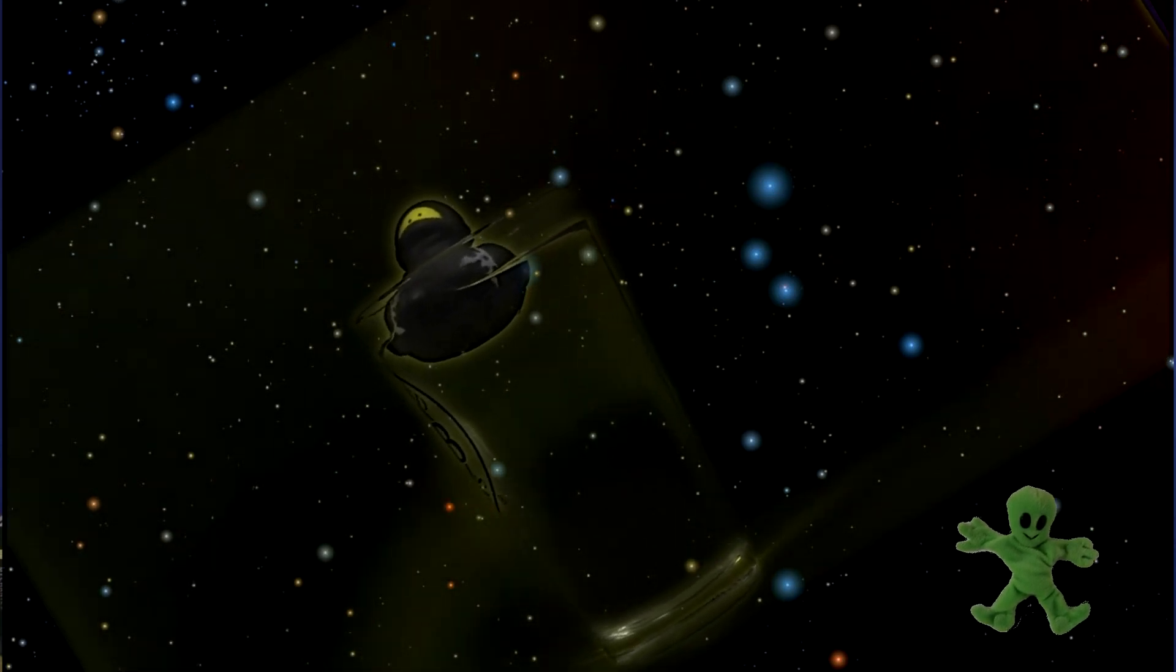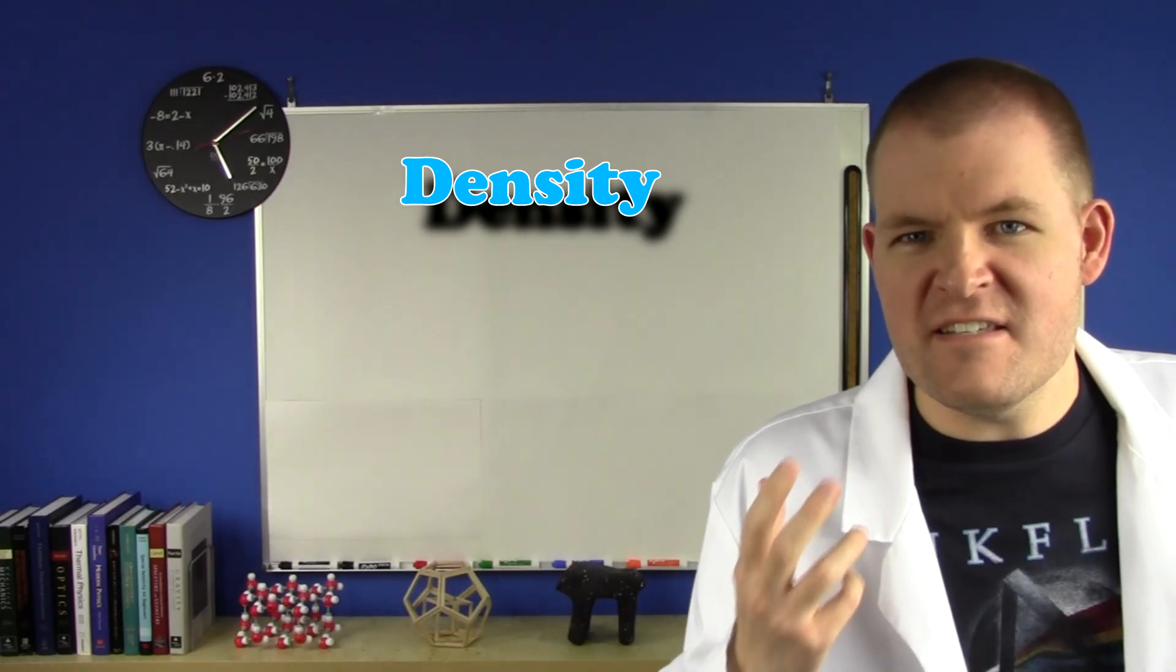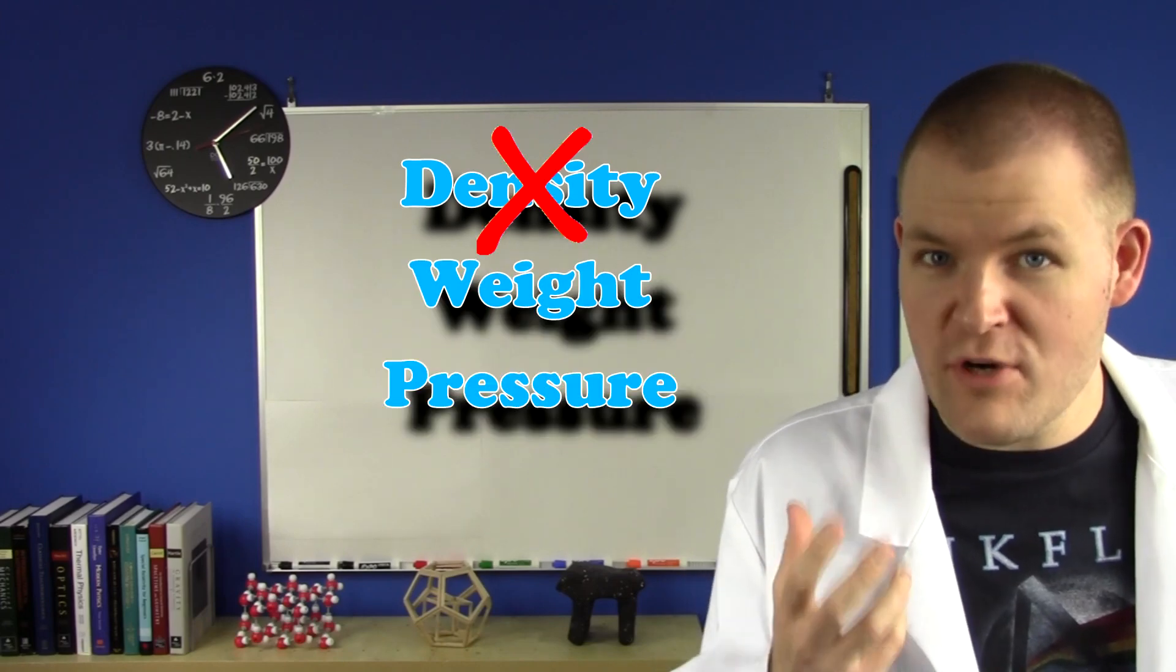Also, if you did this experiment in space, you could put Ninja Ducky anywhere in the water and he wouldn't move. Yet he still has the same density up there. Floating isn't actually about density at all. It's about weight and pressure.